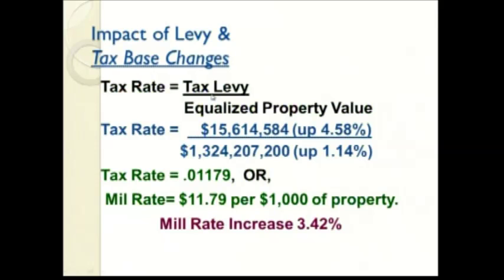The basic formula for calculating the tax rate: you take the tax levy amount and divide it by the equalized valuation, which gives you the tax rate. The tax levy amount is up 4.58% and the equalized property value is up 1.15%. Ideally we'd like to see those switched, since if property value were going up by a larger percentage than the tax levy, you'd end up with a mill rate drop. The tax rate is the raw number; the mill rate expresses it per $1,000 of property value — a 3.42% increase.